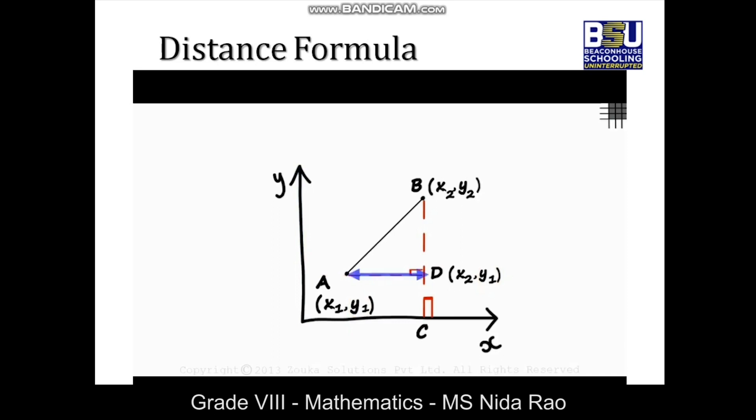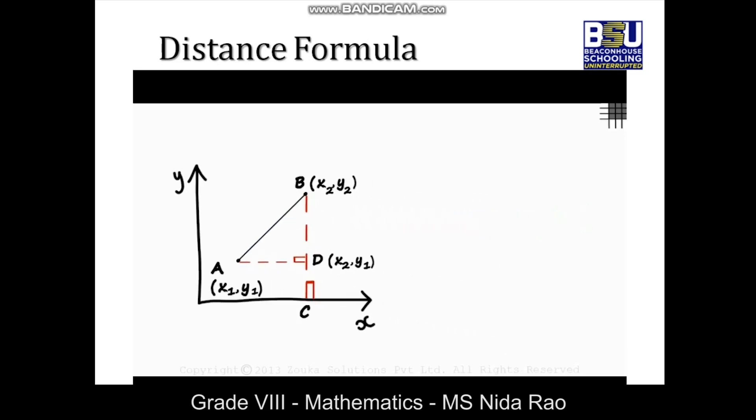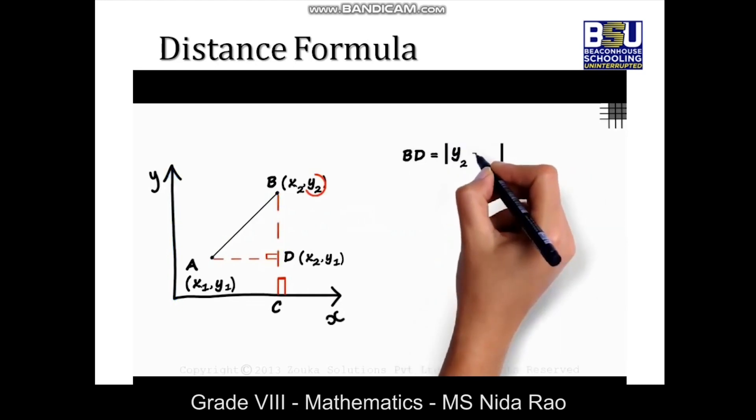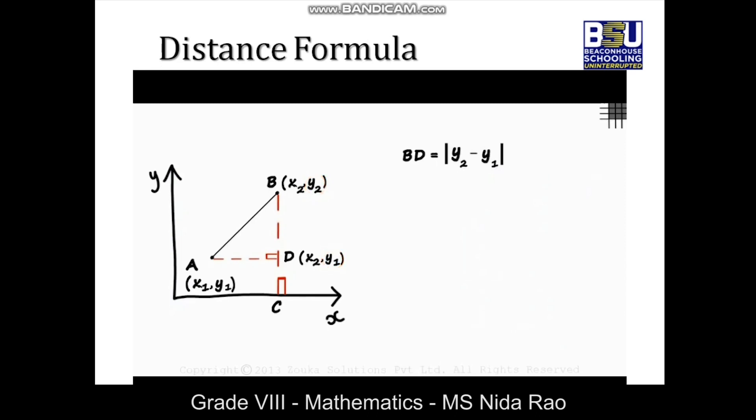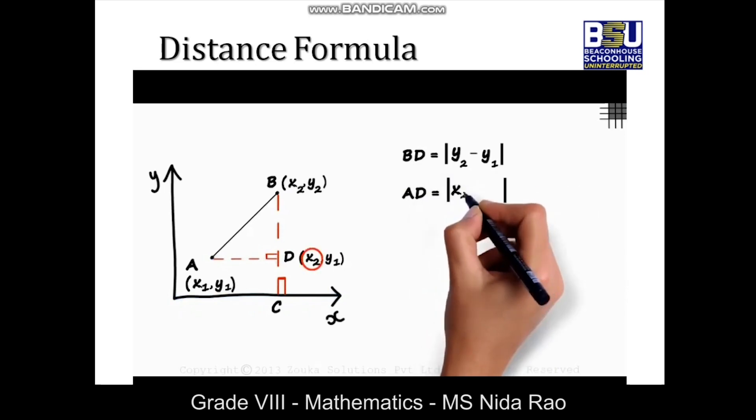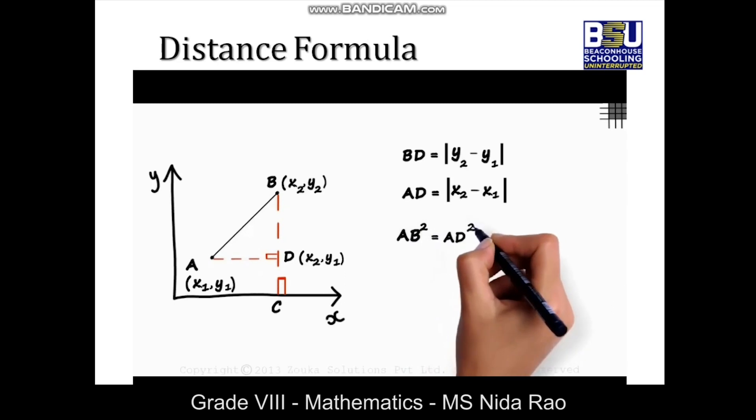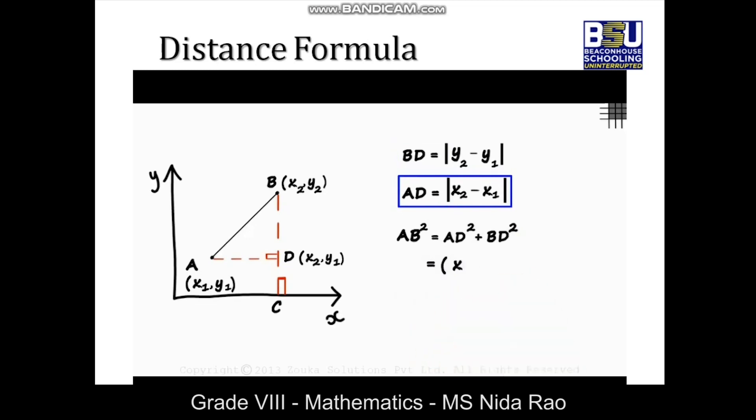Now we find the length of AD and BD and then use Pythagoras theorem to find the length of AB. Since BD is parallel to the y-axis, it will equal the absolute value of y₂ minus y₁. And since AD is parallel to the x-axis, it will equal absolute value of x₂ minus x₁. Using the Pythagoras theorem in this triangle we get AB² = AD² + BD². Substituting these values, the expression will equal (x₂ - x₁)² + (y₂ - y₁)².